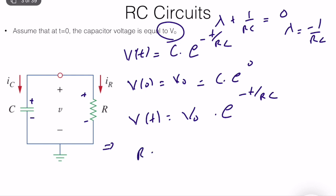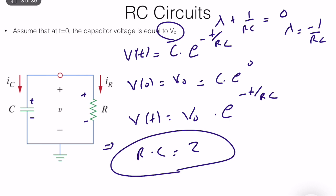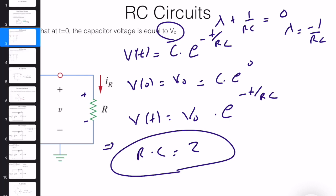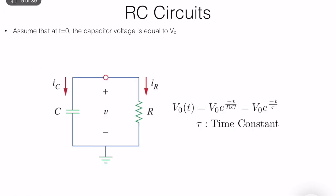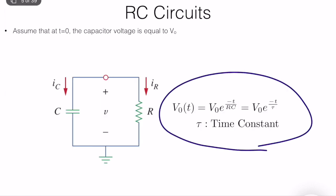V of t equals V0 times e to the power minus t divided by RC. RC is in units of seconds and is called the time constant of the system. It determines how fast — or how long — it will take to reach a convergence point. RC is the time constant, V0 is the initial condition, which we directly used for solving this problem. Since it's a first-order equation, the solution is super easy — you only need the initial condition and the time constant.